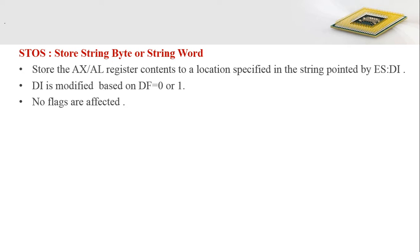Similarly, the STOS instruction stores string bytes or words. It stores the content from AX or AL to the location pointed by ES:DI. DI is modified based on the direction flag: 0 means auto-increment and 1 means auto-decrement. No flags are affected by this instruction's execution.